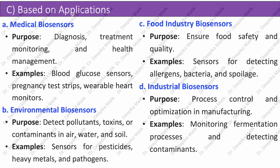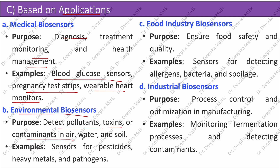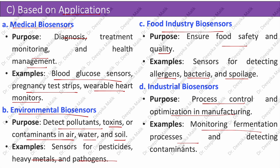Based on application: medical biosensors are used for diagnosis, treatment monitoring, and health management — examples include blood glucose sensors, pregnancy test strips, and wearable heart monitors. Environmental biosensors detect pollutants, toxins, or contaminants in air, water, and soil — examples include sensors for pesticides, heavy metals, and pathogens. Food industry biosensors ensure food safety and quality by detecting allergens, bacteria, and spoilage. Industrial biosensors are used in process control and optimization in manufacturing, including monitoring fermentation processes and detecting contaminants.